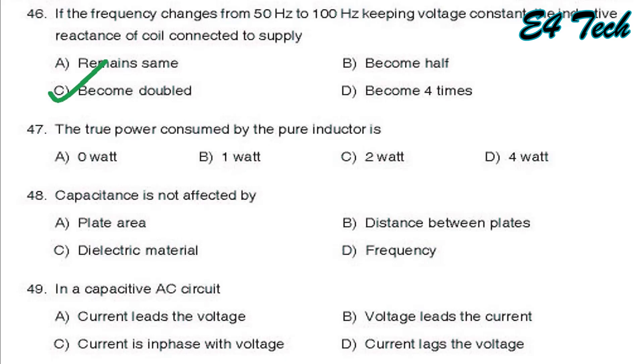Next, the true power consumed by a pure inductor. Power consumed by a pure inductor will always be zero. That is option A, zero watts. Capacitance is not affected by plate area, distance between the plates, dielectric material, frequency. Capacitance C is equal to epsilon zero A by D. It does not depend on the frequency of the supply. That is capacitance is not affected by frequency of the supply. That is option D.